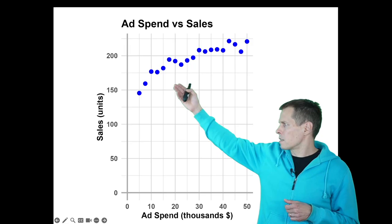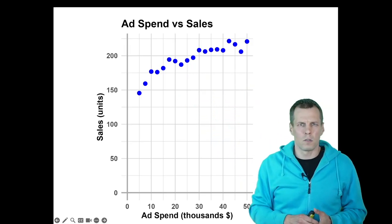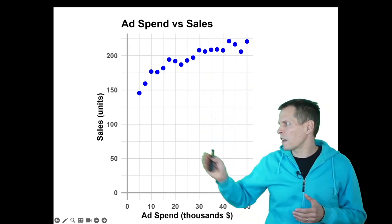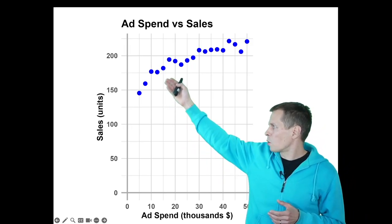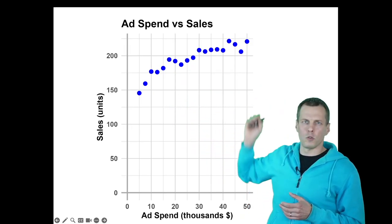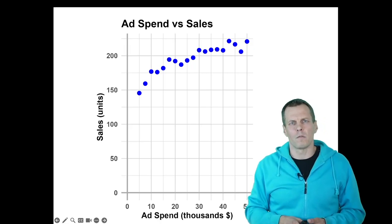And then there is diminishing returns to advertisement. So a little bit of advertisement gets you from 150 to 200, but then going beyond 200 is much more difficult. So we have diminishing returns.